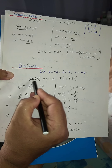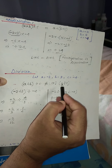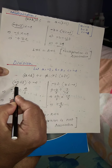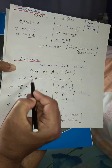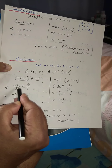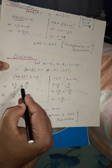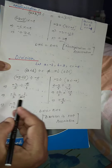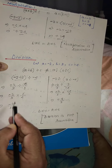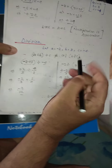Now for division, keeping the same values. The property states: (a ÷ b) ÷ c is NOT equal to a ÷ (b ÷ c). For the LHS: in place of a, minus 2, divided by b which is 3, close the bracket, divide by c which is minus 4. We can write the division in fraction format, and when we replace the division sign with multiplication, the fraction gets its reciprocal. So minus 2 over 3, multiplied by 1 over 4, gives minus 2 over 12.